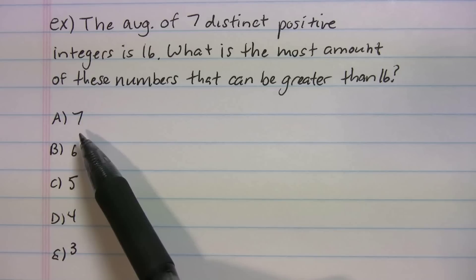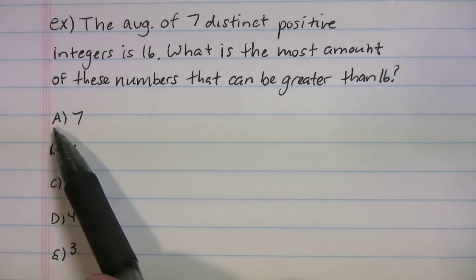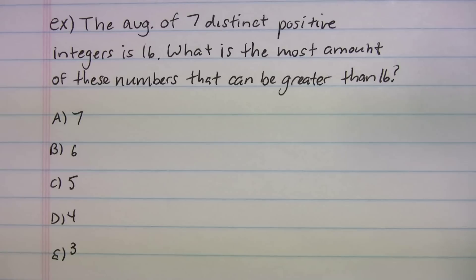Does it make sense if we have seven distinct positive integers that all of them are greater than 16? That's like saying your average grade in math was a 50 and you got seven grades above a 50. It doesn't make sense, right? It's not possible. So that one's wrong right off the bat.